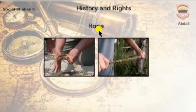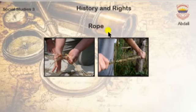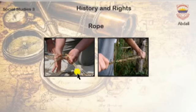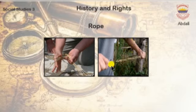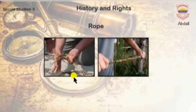Our next slide is Rope. How were ropes made? Rope was made by knotting together creepers and crosses.